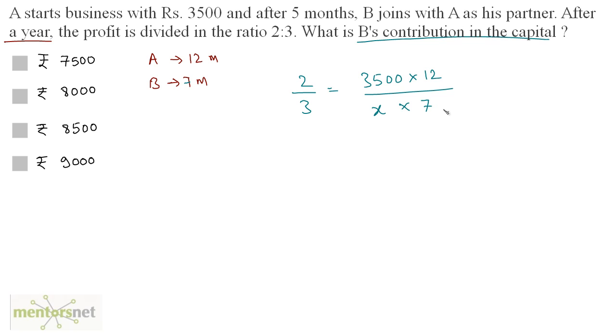So 7 times 5 is 35. So 7 times 500 is 3500. We have X equals 500 times 12 times 3 divided by 2. 2 times 6 is 12. So 500 times 18 and that is equal to—the X's value is 9000 rupees. So B's contribution to the capital is 9000 rupees that is option D.